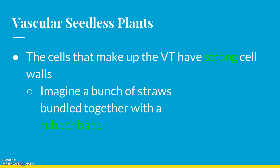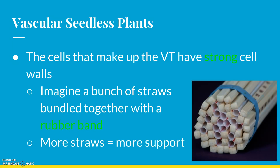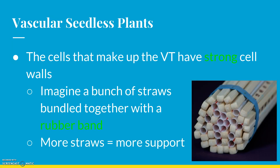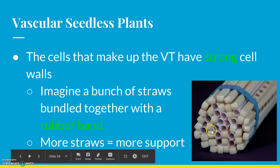Imagine a bunch of straws together with a rubber band — more straws, more chopsticks, more support. Let's say the five in the middle are the sugar tubes and the ones on the outside are the water tubes. The water goes up, the sugar comes down, and the whole plant is happy.